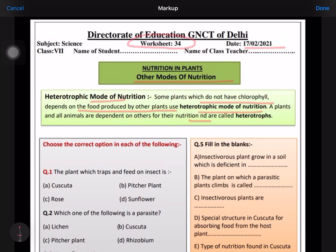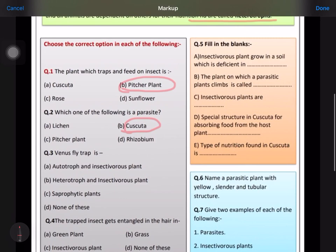First, the plant which traps and feeds on insects is known as pitcher plant. Which of the following is a parasite? It is Cuscuta. Venus fly trap is autotrophic as well as insectivorous.